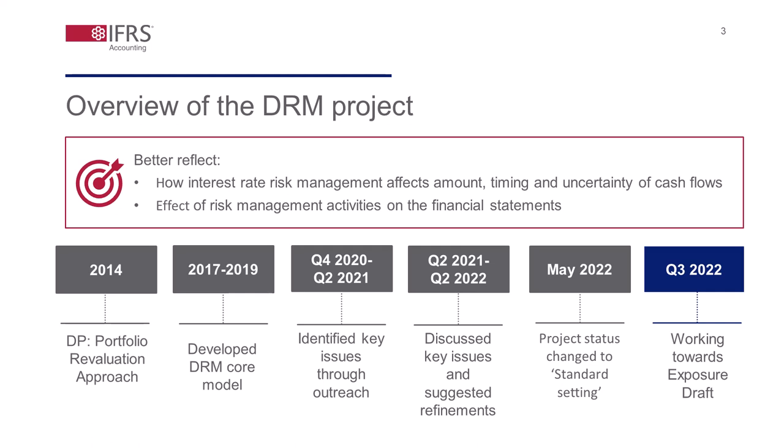Towards that end, the IASB published in 2014 a discussion paper on accounting for dynamic risk management: a portfolio revaluation approach to macro hedging. Unfortunately, the feedback on the discussion paper was not positive, and therefore the IASB decided to develop a new model between 2017 and 2019 — the DRM core model. The DRM team performed informal outreach on the new DRM core model in 2020, and as a result, the IASB made a number of refinements to reflect the feedback received and make the core model viable and operable. We are working towards an exposure draft now, and you may find some more details about the project history on our website.